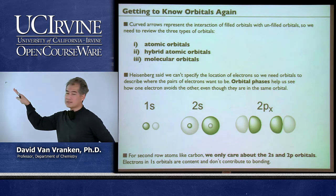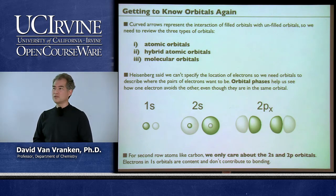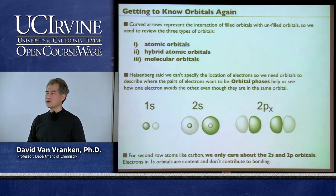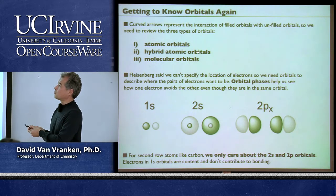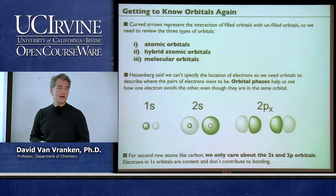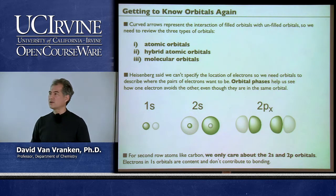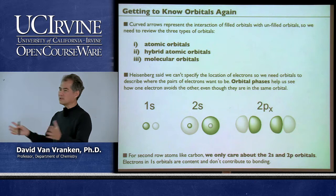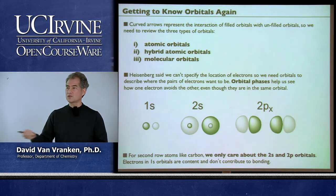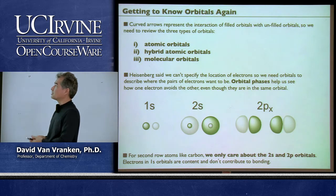We need to really embrace this idea that orbitals and their interactions are important. Here's what we're going to talk about today: the three types of orbitals you need to have mastered, and what you need to know about them when thinking about filled-orbital/unfilled-orbital interactions. We'll start with atomic orbitals, then hybridized atomic orbitals (s and p), and finally molecular orbitals—which serve as the underpinnings for understanding what's reactive and what's not in organic chemistry.